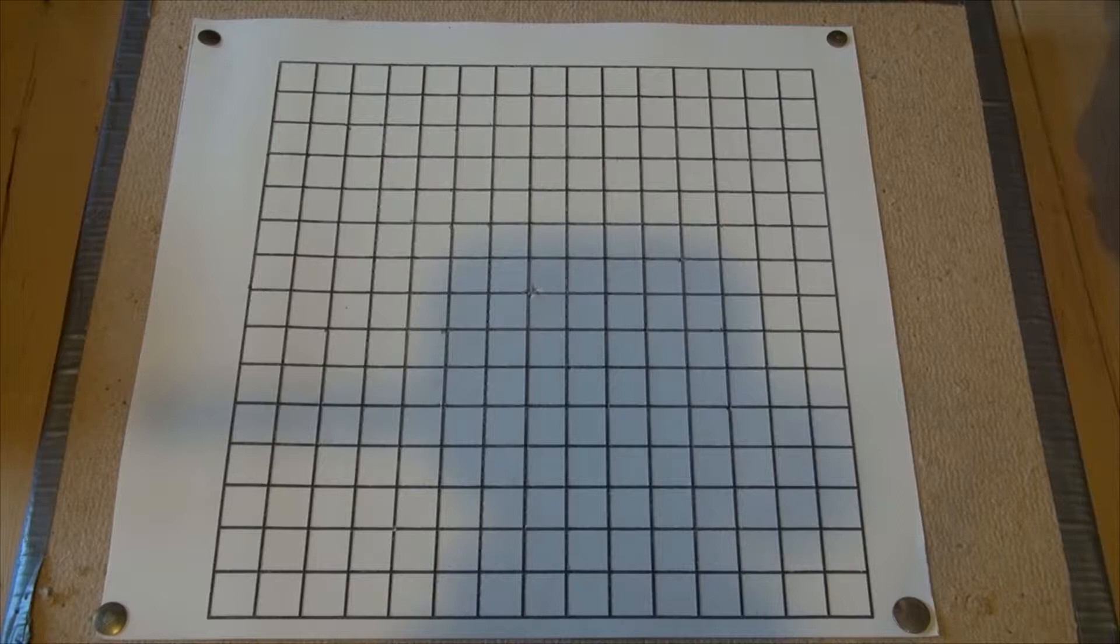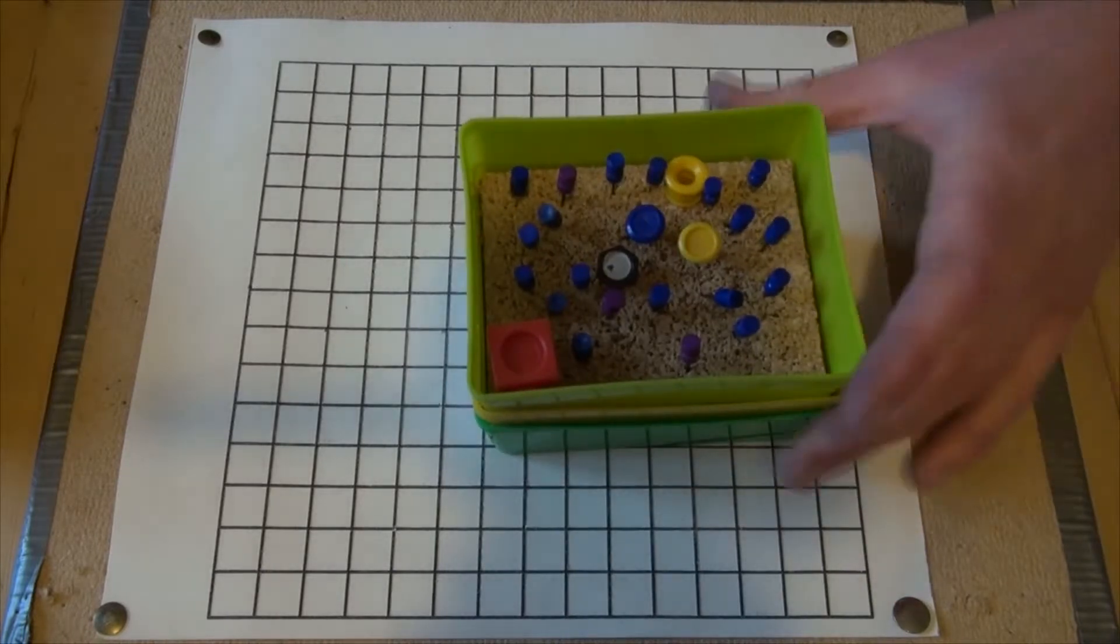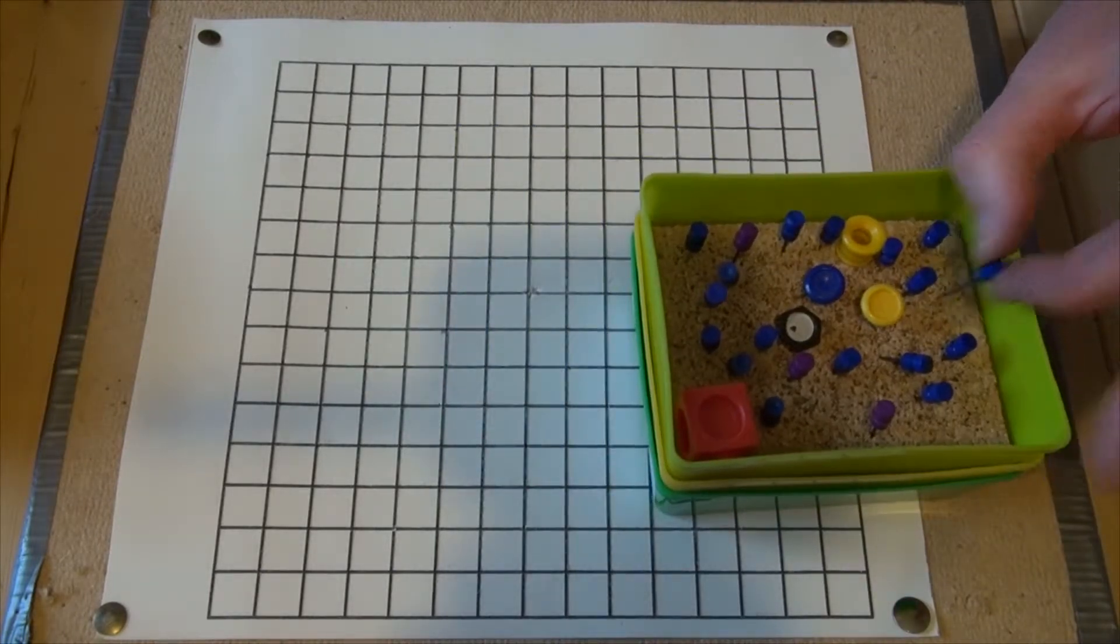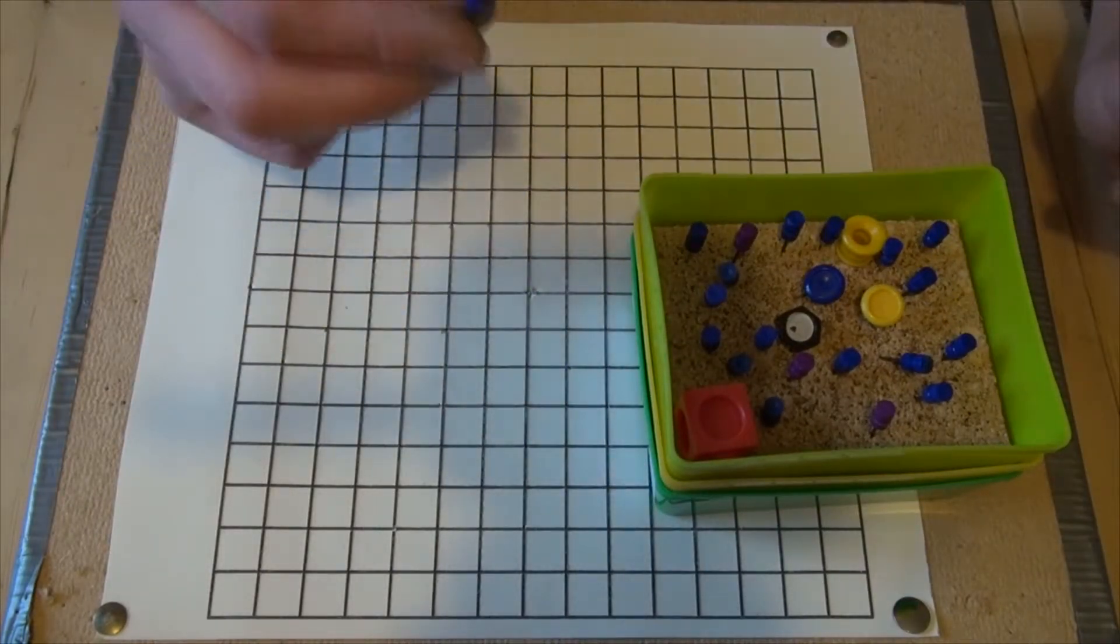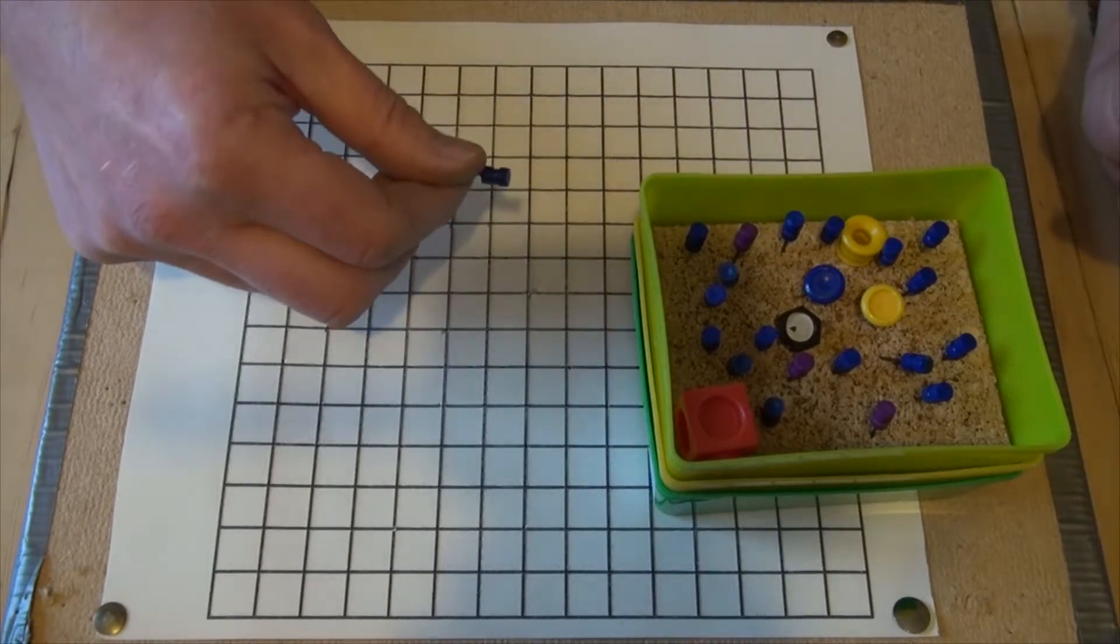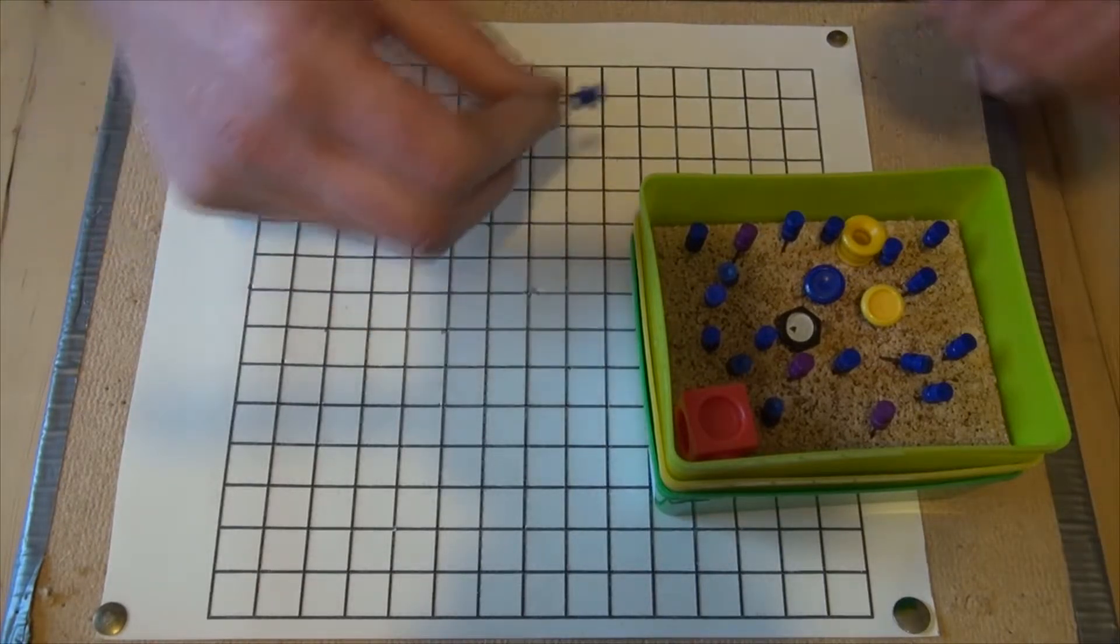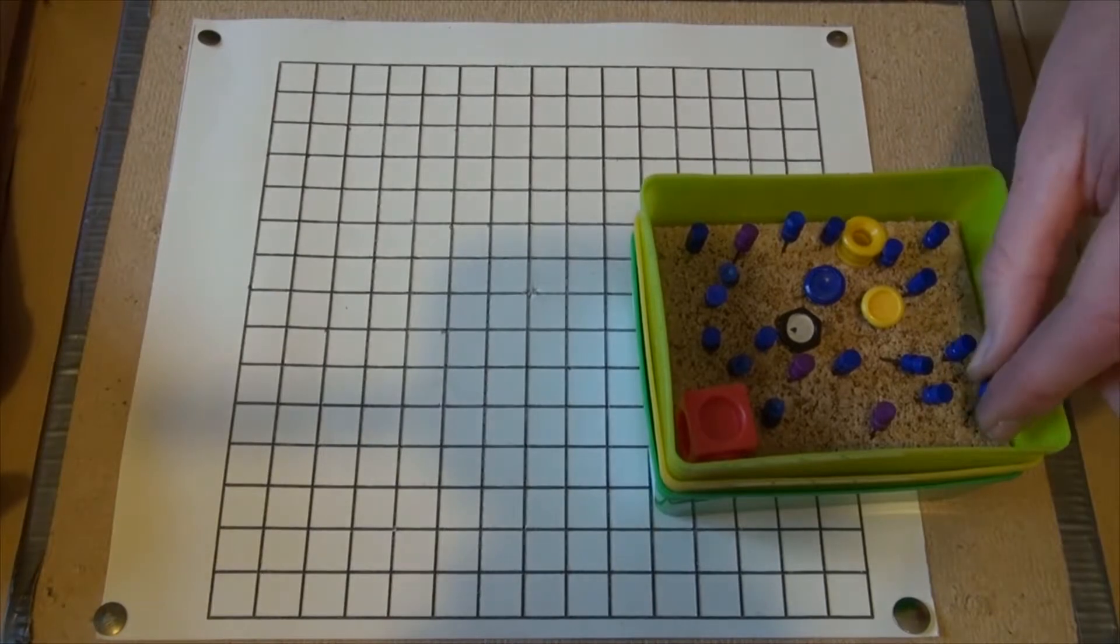So we'll take a look at the contents of what I call a pin box. So we've got lots of these sorts of pins, which are called barrel pins. Lots of those, those are for plotting the coordinates.